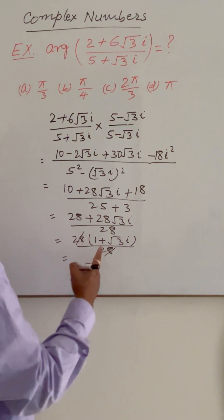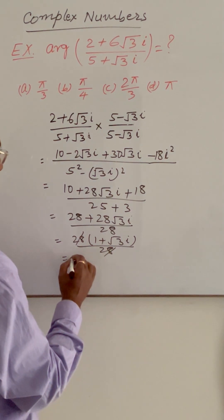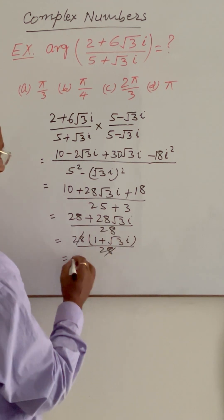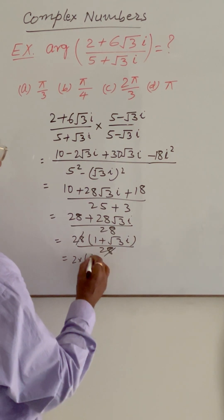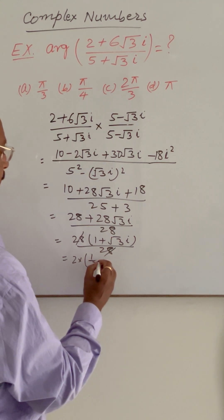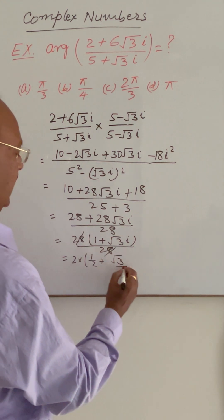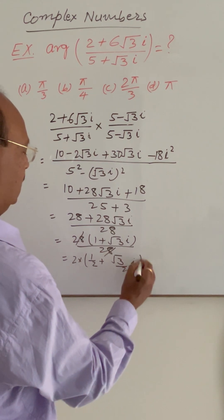And 1 plus root 3i here we can multiply and divide with half. So here 2 into 1 by 2 plus root 3 by 2 into i.